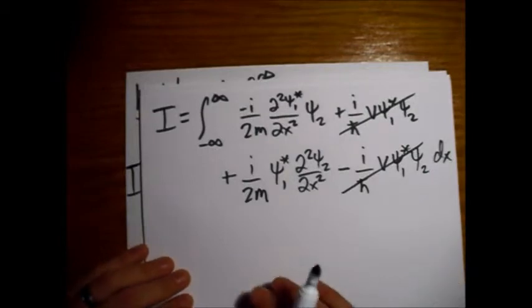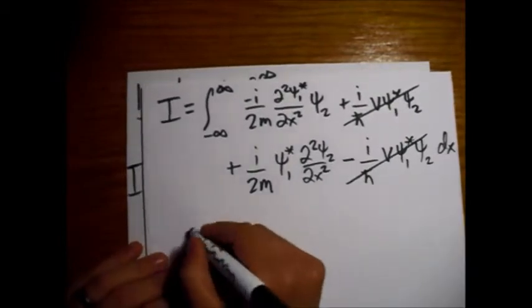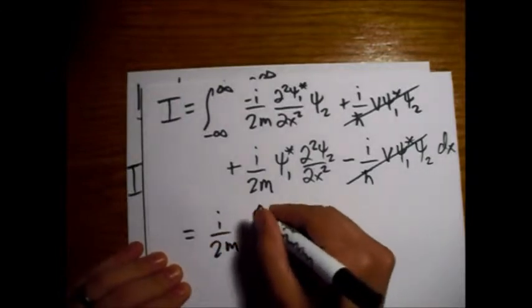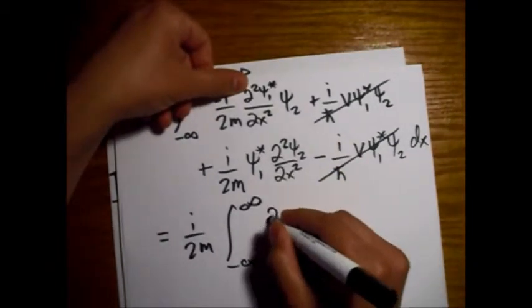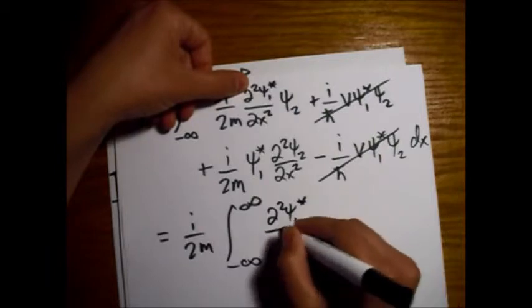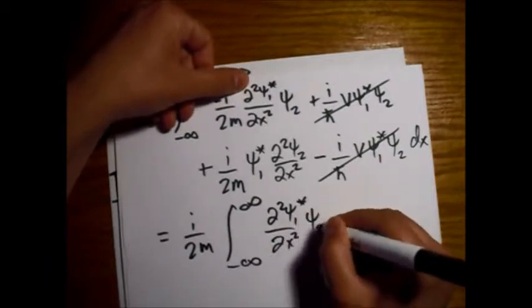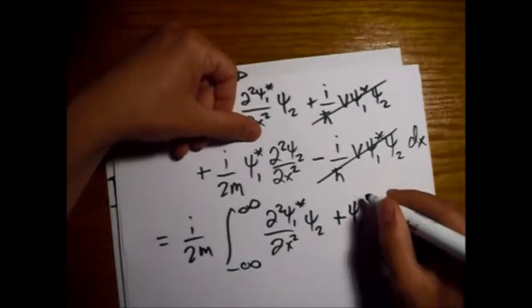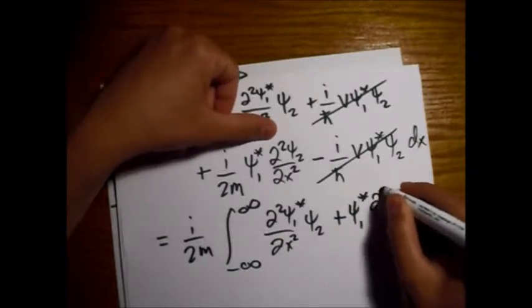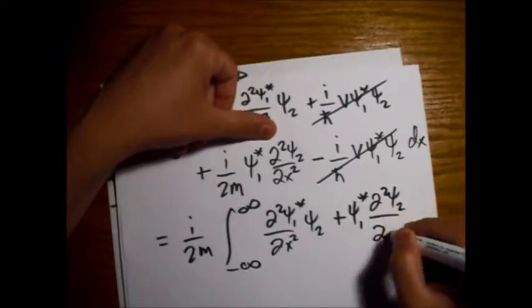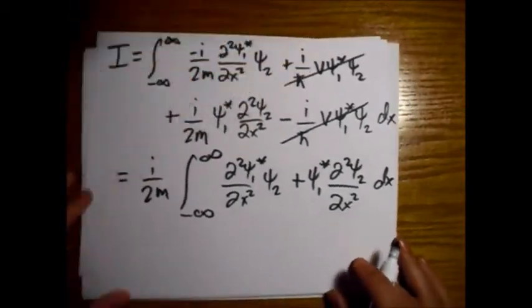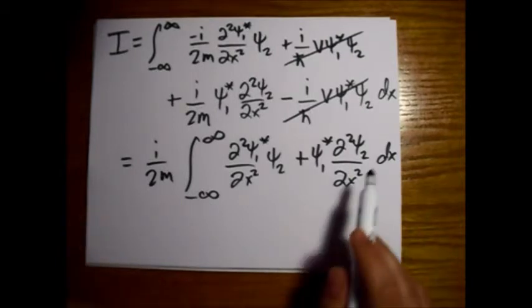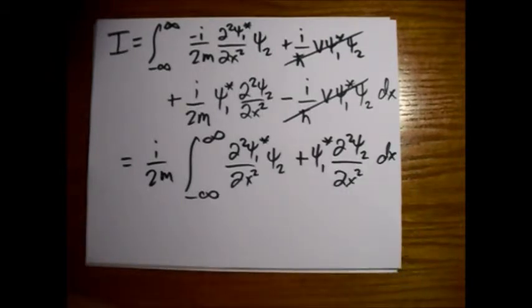And now basically what we need to do. I'll just rewrite this real quick. Bring the constants out front. Alright. So now the trick here is we're going to be using integration by parts again. And again these wave functions go to zero at infinity. So we don't have to worry about the boundary term.